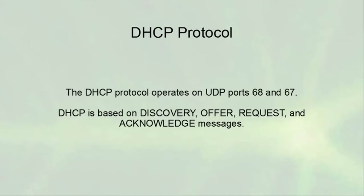A client comes online and sends a DHCP discover packet. A DHCP server, assuming it sees it, sends a DHCP offer with an IP address the client could use. The client collects all offers it receives and chooses — usually the first one — then requests that specific address from that DHCP server. The request is sent as a broadcast so all other DHCP servers who made offers see it. The acknowledgment comes back, letting the client know the request is acknowledged and they can start using that address.